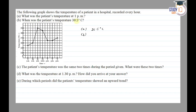Part B asks: when was the patient's temperature 38.5 degrees Celsius? We will match 38.5 on the graph and join it to the x-axis. It will be 12 noon. So the answer is 12 noon.